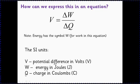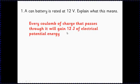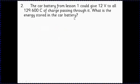So here's a battery - not a can battery but a car battery that should say - is rated at 12 volts. What does this mean? Hopefully you've got the idea that it means that every coulomb of charge that passes through the battery will gain 12 joules of electrical potential energy. So if you go back to the car battery from lesson one, 12 volts if that's the 12 volt battery, and we worked out in that question that 129,600 coulombs of charge could pass through it.